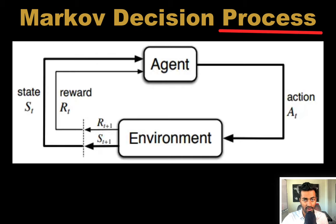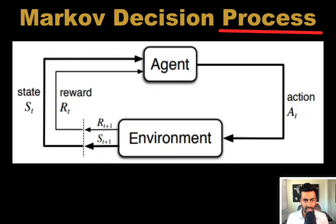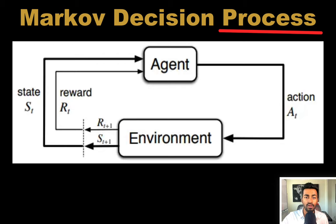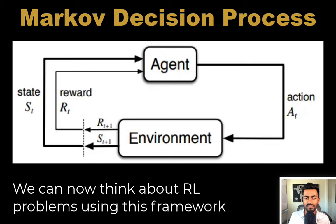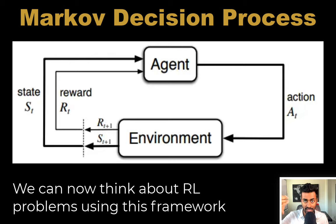The 'process' in Markov decision process emphasizes the interaction between the agent and the environment as a sequence of steps. The agent's decisions and the consequences of those decisions unfold as a process, where each step is influenced by the current state and action. This setup gives a concrete starting point to think about solving problems with reinforcement learning. When solving a problem with the MDP framework, we need to define the agent, environment, action space, state space, and the rewards.